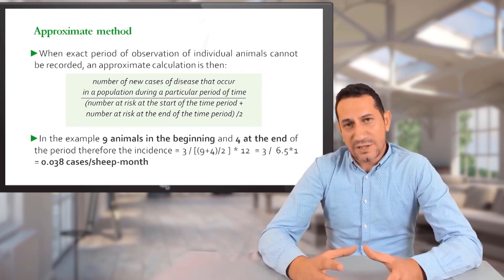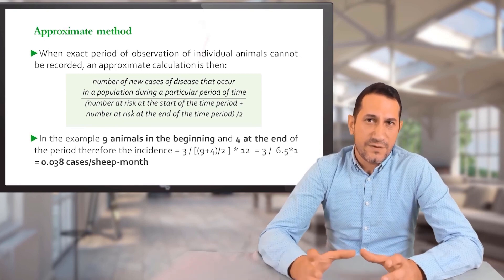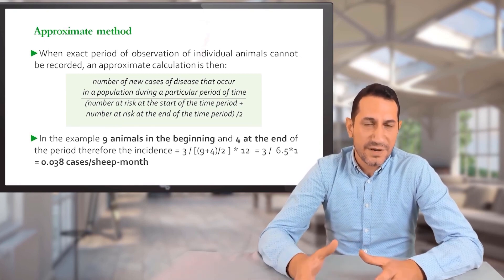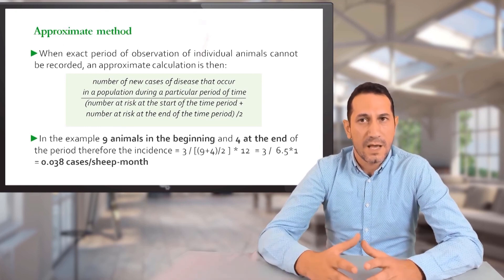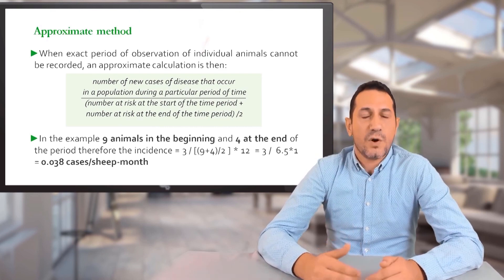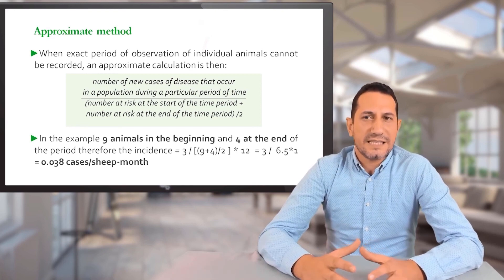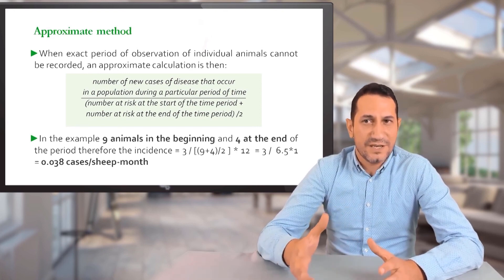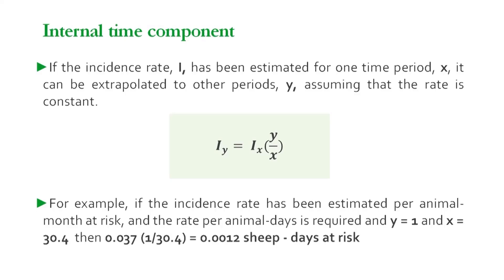The exact and approximate values are equal when the exact average period of risk for diseased animals is half of the observation period. In this case, the approximate denominator overestimates the exact rate because the exact average period of risk of diseased animals is more than six months.